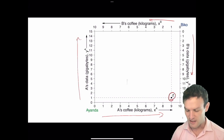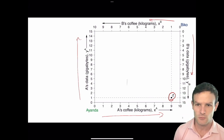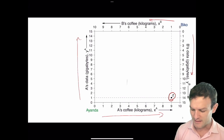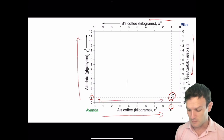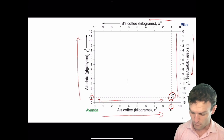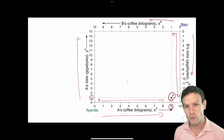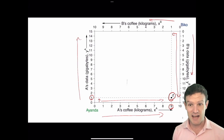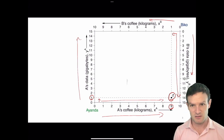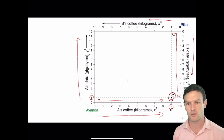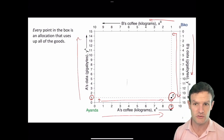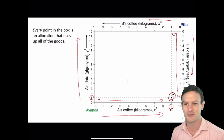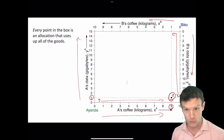We have one allocation here, point z, which shows how much each person has. At point z, Ianda has nine units of the x good and one unit of the y good. Biko has 14 of the y good and only one of the x good. The total amounts sum correctly: nine plus one equals x-bar, so there are 10 units of x in this economy. Similarly, 14 plus one gives 15 units total of good y. Every point in the box is an allocation that uses up all of the goods — x-bar and y-bar are exhausted at any point in the box.